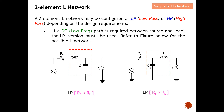For the second low pass configuration, the series arm connects to the lower resistor value and the shunt element connects to the higher resistor. So when RS is greater than RL, RL has the series component while RS — being the larger value — has the shunt element.